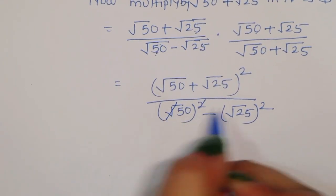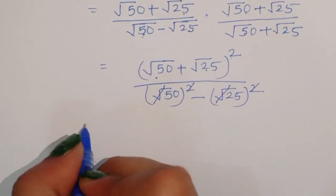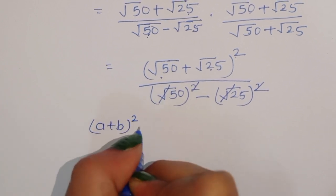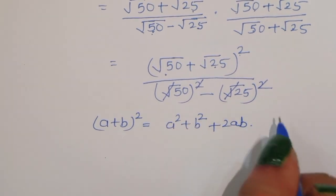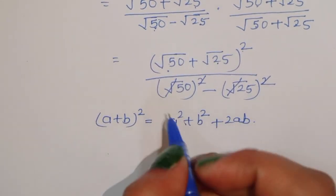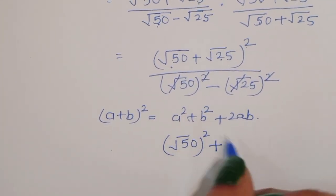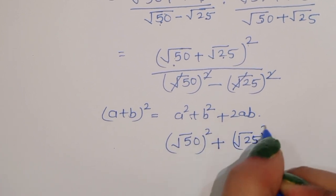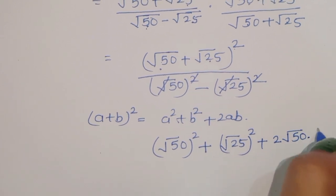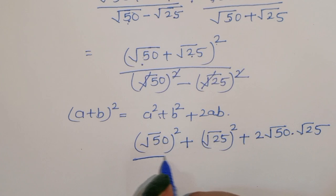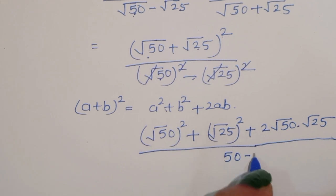The denominator cancels to 50 - 25. For the numerator, using the (a + b)² = a² + b² + 2ab formula: a² is (√50)² = 50, b² is (√25)² = 25, and 2ab is 2×√50×√25. So we get 50 + 25 + 2√50×√25, all divided by 50 - 25.